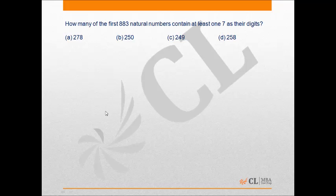If we look for the numbers that contain at least one 7 out of the first 100 natural numbers, these are 7, 17, 27, 37, 47, and 57.